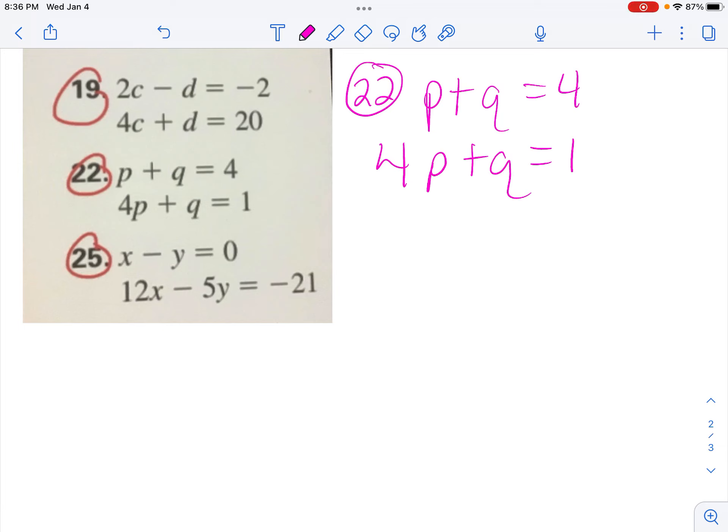You can use either equation to isolate a variable. So I'm just going to choose the first one, p plus q equals 4. And it doesn't matter if I isolate the p or the q, but looking at this second equation here, I see the q by itself, and it's probably going to be easier to plug something in there and substitute for that q.